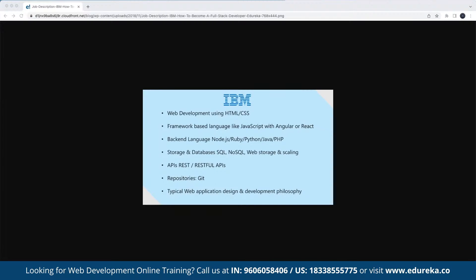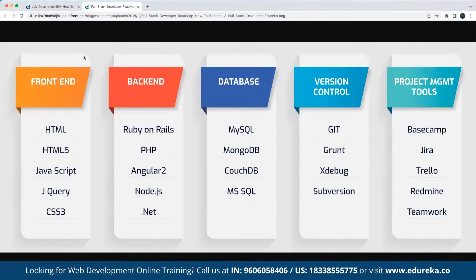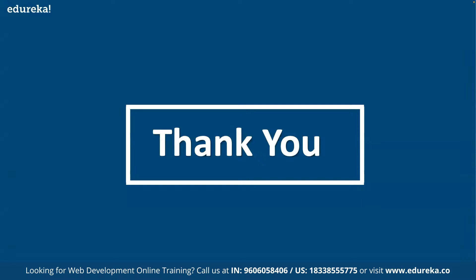To give a high-level view of the technologies to learn: under front-end we have HTML5, JavaScript, jQuery, and CSS; under back-end we have Ruby on Rails, PHP, Angular 2, Node.js, and .NET; under database we have MySQL and MongoDB. With this we come to the end of today's session about how to become a full stack web developer and the importance of full stack web development in the current world. Thank you so much, everyone.